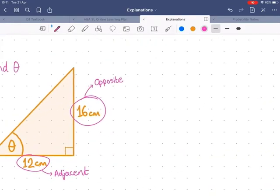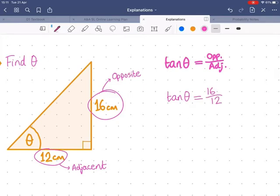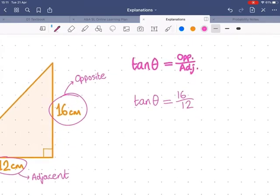Now, next step, which of these three equations uses the opposite and adjacent? Well, tan. So tan of our angle equals opposite over adjacent. And now we can start to fill in what we know. Tan of theta, we still don't know theta, that's what we're trying to find, that equals opposite 16 over adjacent 12.